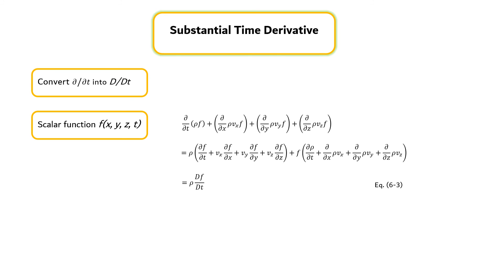According to the equation of continuity, the quantity in the second parenthesis in the second line is 0. Consequently, Equation 6.3 can be written in vector form as shown in Equation 6.4 and Equation 6.5. These equations can be used to rewrite the equation of change given in terms of the substantial derivative.